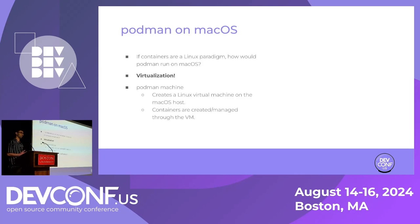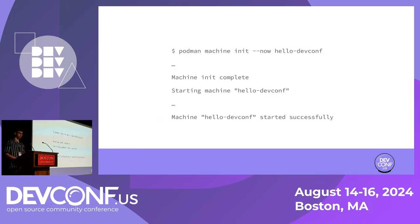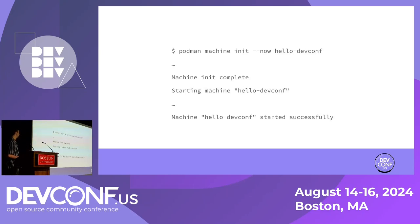So if containers are a Linux paradigm, how would Podman run them on macOS? The answer is virtualization. Podman machine has a subcommand called podman machine, and this will actually create a Linux virtual machine on your macOS host. When you're creating and managing your containers, you're actually doing it through this Linux virtual machine. Booting up this virtual machine is quite simple — it's a single command in your terminal. It'll pull the image, configure your virtual machine, and start it. It only takes about 10 seconds.